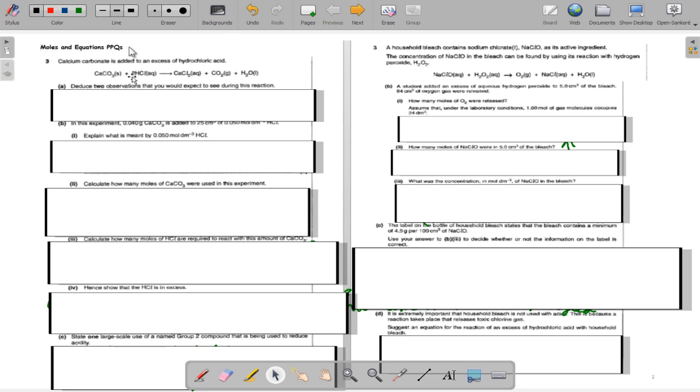Hello and welcome to my Moles and Equations past paper question video. Today we're going to talk about calcium carbonate and how it reacts with hydrochloric acid to get calcium chloride plus carbon dioxide and H2O. We need to find two observations that you would expect to see during the reaction and do some moles calculations.